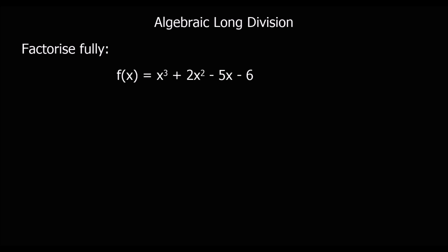This next question says factorise fully, meaning put into brackets. We have a cubic function to factorise but haven't been given any factors to start with, so we can't use algebraic long division yet. We first use the factor theorem — finding what value of x makes the function equal zero. Let's try substituting in x equals 1.